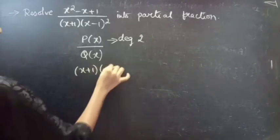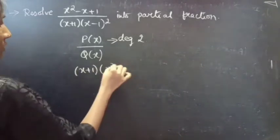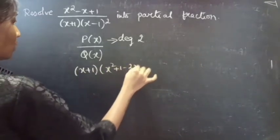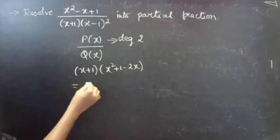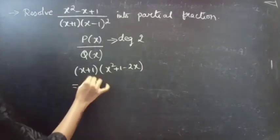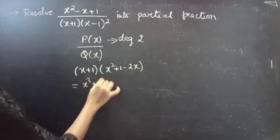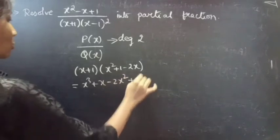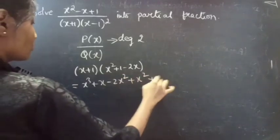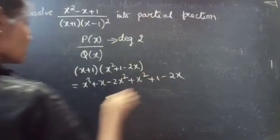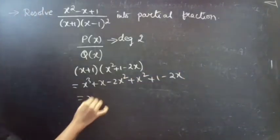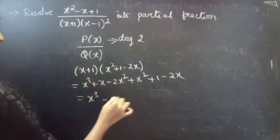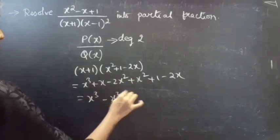Q(x) equals (x+1)(x-1)², which expands to x² + 1 - 2x, giving us x³ + x - 2x² + x² + 1 - 2x, which equals x³ - x² - x + 1.